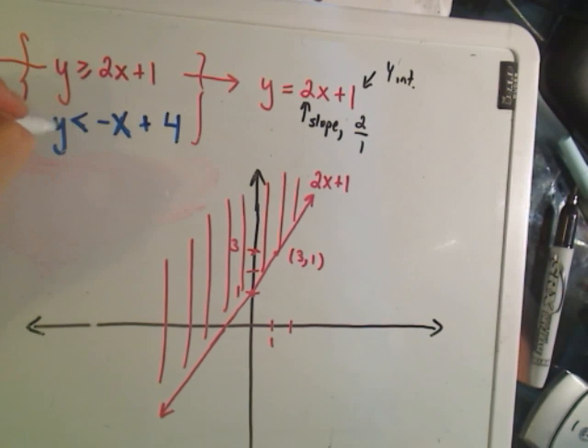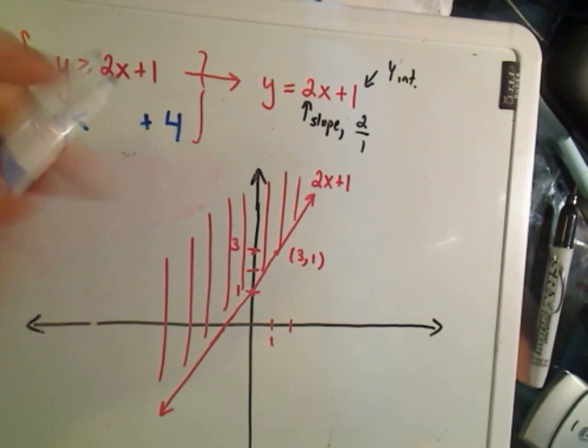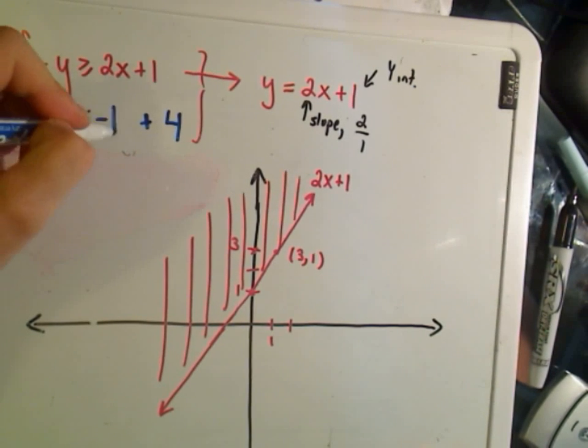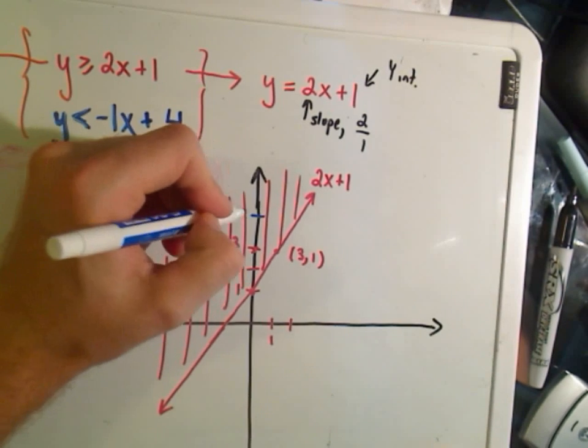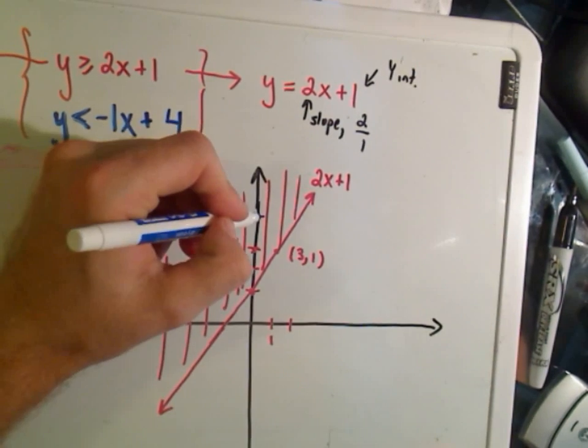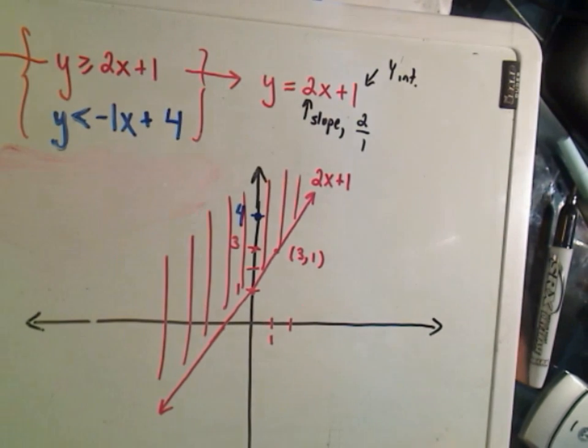In the same way, I've got to graph now y less than or equal to negative x. And I could rewrite that as negative 1x plus 4. Well, again, this line is going to have a y-intercept of 4. So I can put a little dot right there.